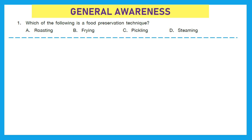First section is General Awareness. Question 1: Which of the following is a food preservation technique? Roasting, frying, pickling or steaming? The right answer is option C, pickling, because with that we generally preserve the food. By roasting, frying and steaming, we are cooking the food.